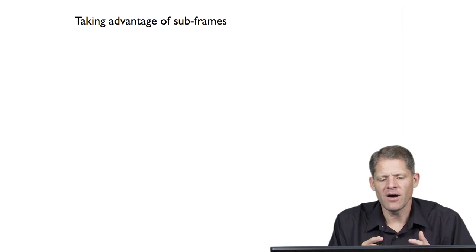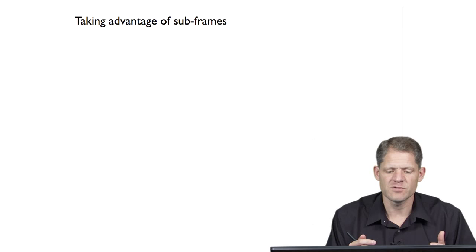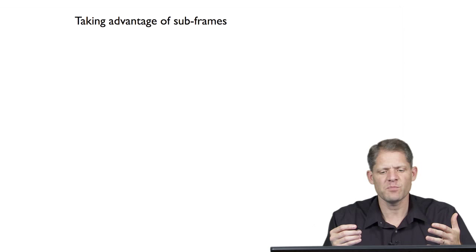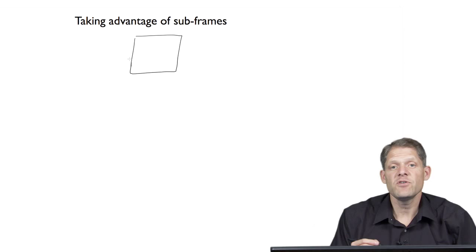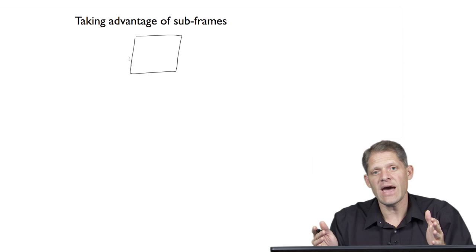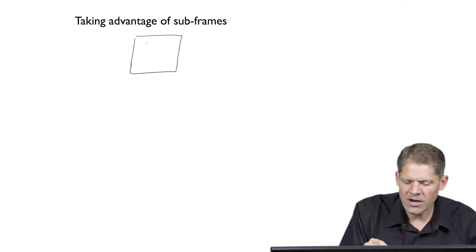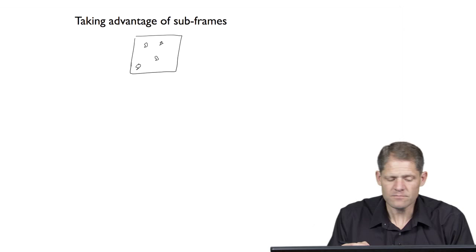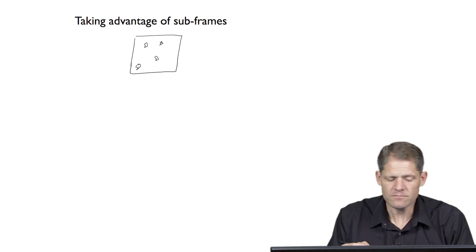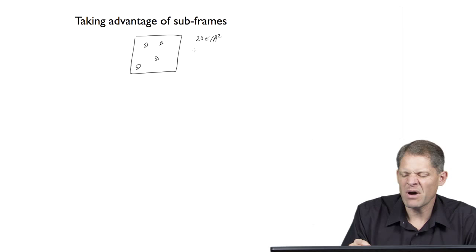Now let's talk about taking advantage of the new capability of direct detectors to record in what has been called movie mode, where you can record subframes during an exposure. If your detector is a CCD, CCDs generally take a very long time to read out — 5, 10, 20 seconds — and so they deliver single images. In a typical scenario, you might invest 20 electrons per square angstrom into that image, delivered in a total of about one second on a CCD camera.